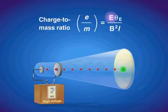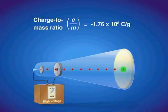Where e is the applied electric field, theta is the angle of deflection, b is the applied magnetic field, and l is the distance traveled by the cathode rays. Thompson determined the charge to mass ratio of an electron to be negative 1.76 times 10 to the 8th coulombs per gram.